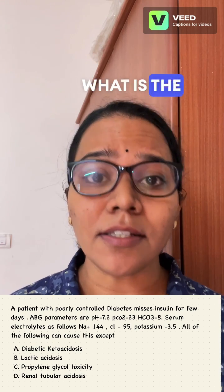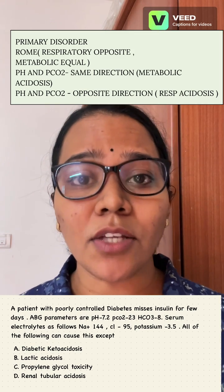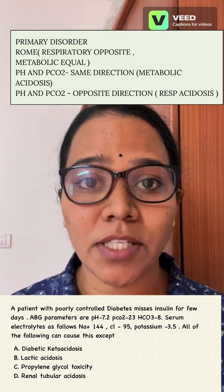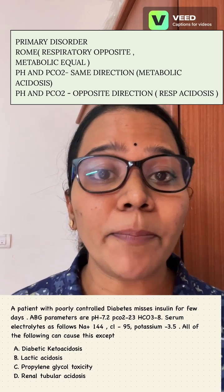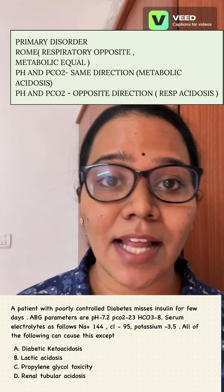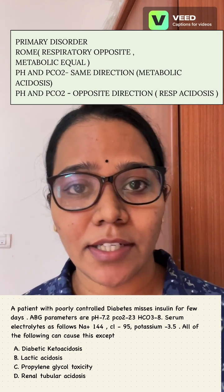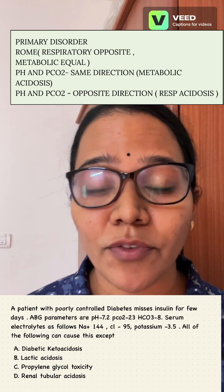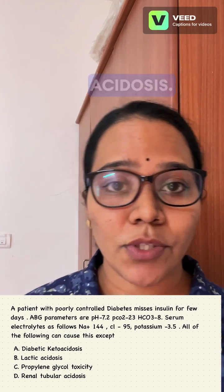Second, you check what is the primary disorder. Use the ROME mnemonic: Respiratory is in the Opposite direction, Metabolic is in the Equal direction. For this, you look at PCO2. If PCO2 is in the same direction as pH, it is metabolic acidosis. If PCO2 is in the opposite direction of pH, it is respiratory acidosis.